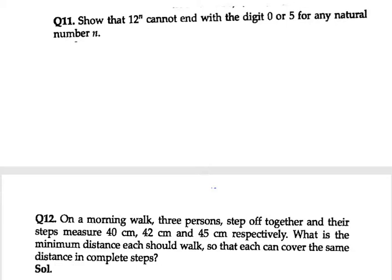A number ending in 0 or 5 must be divisible by 5. In this case we are given 12 raised to power n. I will take the prime factors of 12 and it can be written as 2 into 2 into 3 raised to power n.